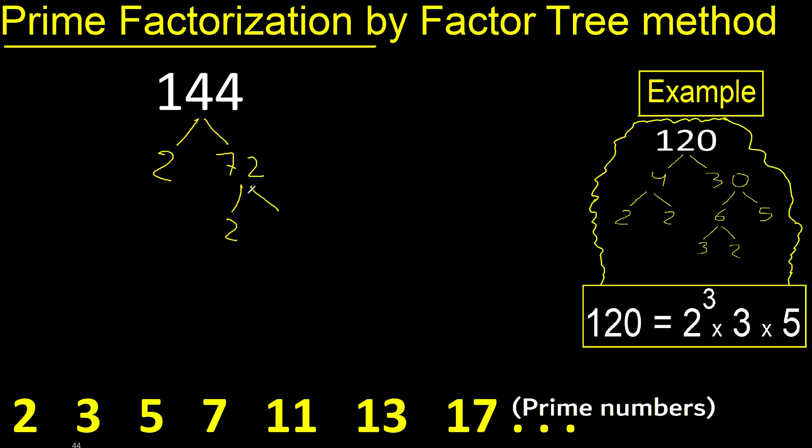Can be divided by 2. Divided by 2 is 36. Divided by 2 is 18. Divided by 2 is 9. 9 is 3 multiplied by 3.